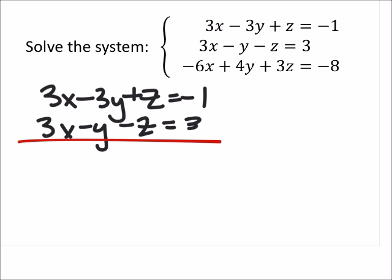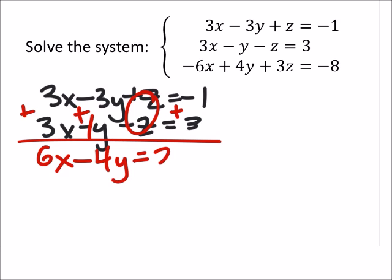So I can eliminate these right away by adding these two equations. Those two go away. Very nice. So three x plus three x is six x. Negative three y plus negative one y is negative four y. And this equals negative one plus three, which is two.